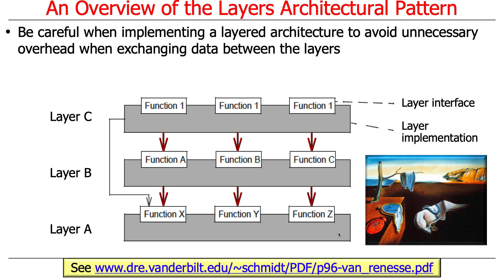One thing you need to be careful of when using layering is avoiding unnecessary overhead when moving between layers. The general rule of thumb is to make interlayer communication as fast as possible, and the typical way of doing that is to arrange it to just be plain function calls. You have to be careful not to organize each layer as a domain-crossing, process-crossing, or computer-crossing boundary. If the functions in layer C are running on a different machine from layer B, and layer B is on a different machine from layer A, there's going to be a lot of overhead moving back and forth. So if your goal is performance, you have to think carefully about how to optimize the layering.